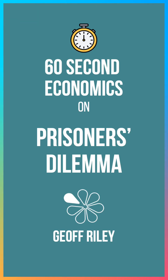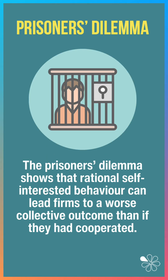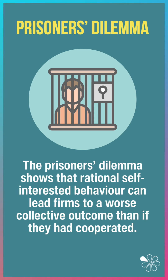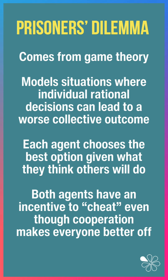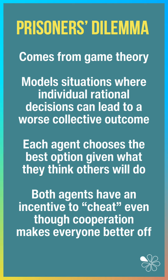60 Second Economics on the Prisoner's Dilemma. This dilemma shows that rational, self-interested behaviour can lead businesses to a worse collective outcome than if they'd cooperated. The dilemma comes from game theory and models situations where individual rational decisions can lead to a worse collective outcome.